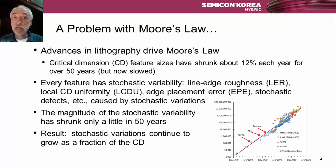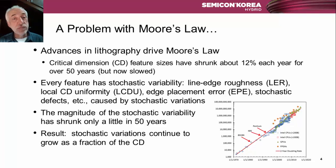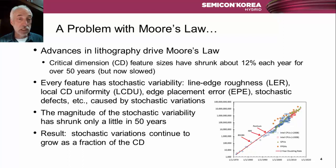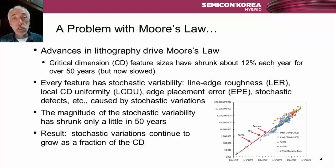Stochastic variability has become the big problem with Moore's Law. We're a victim of our own success. We've had advances in lithography for over 50 years, and for that time frame features have shrunk, on average, about 12% every year. That shrinking has slowed, but we're still pushing features smaller and smaller. Every single feature has stochastic variability — line edge roughness, local uniformity of the critical dimension, edge placement errors, stochastic defects, etc. The magnitude of that stochastic variability has not shrunk much in the last 50 years. So we've been shrinking CDs while the impact of stochastic variability has remained reasonably constant, meaning the stochastic variation as a fraction of the CD grows and grows.